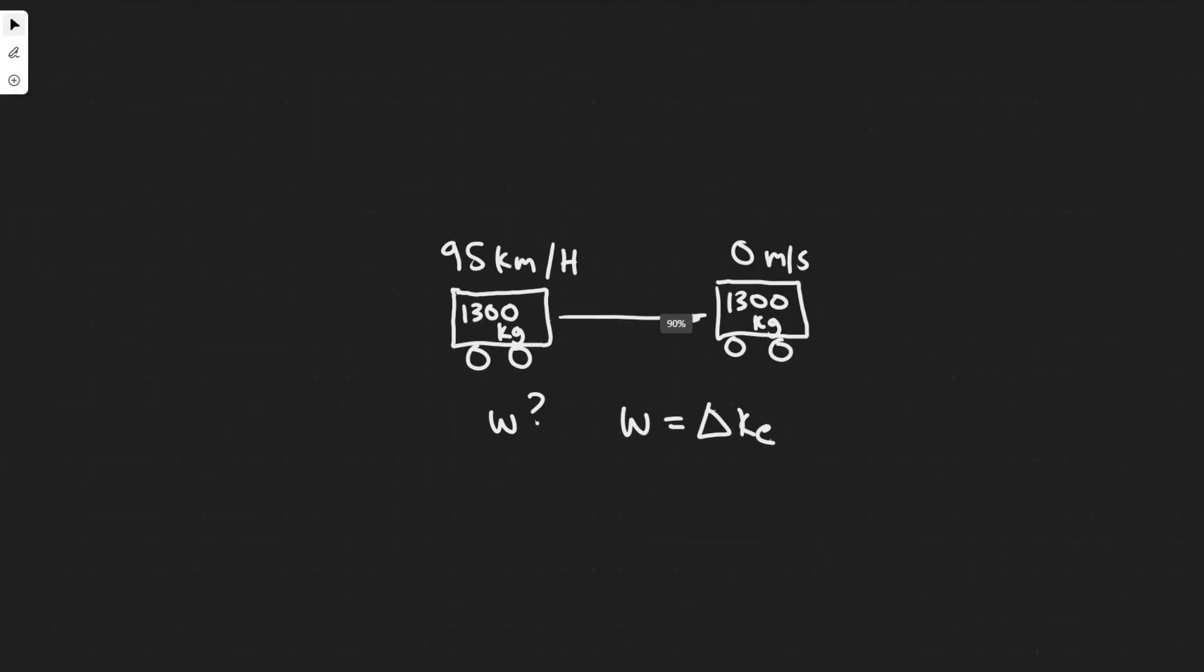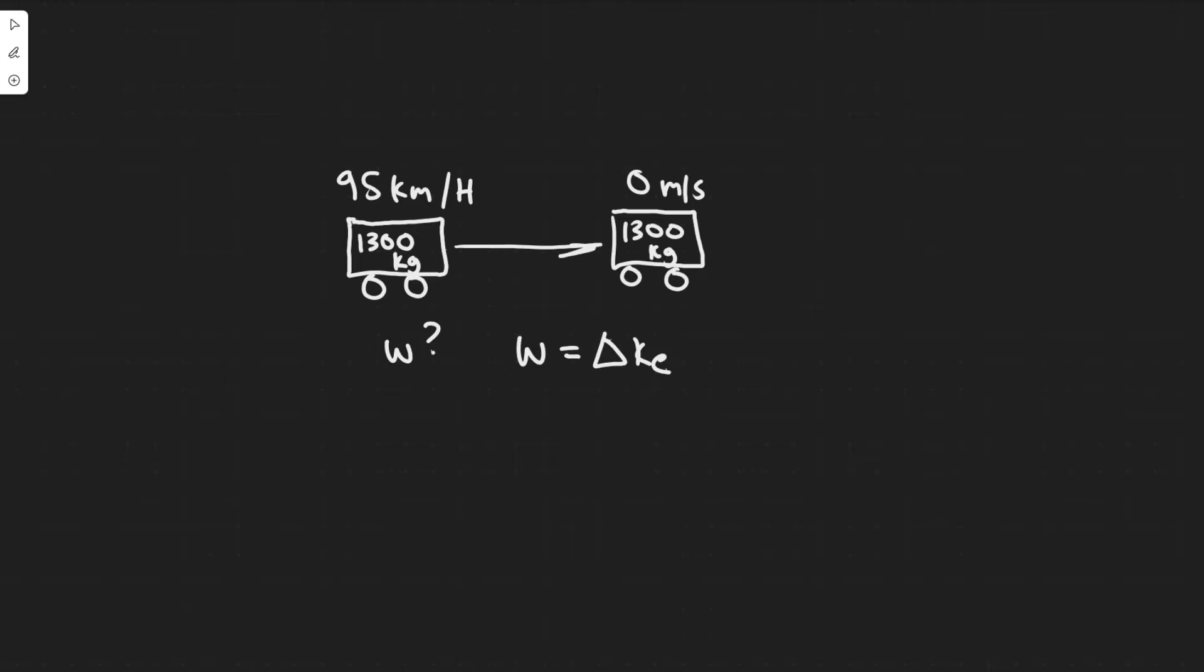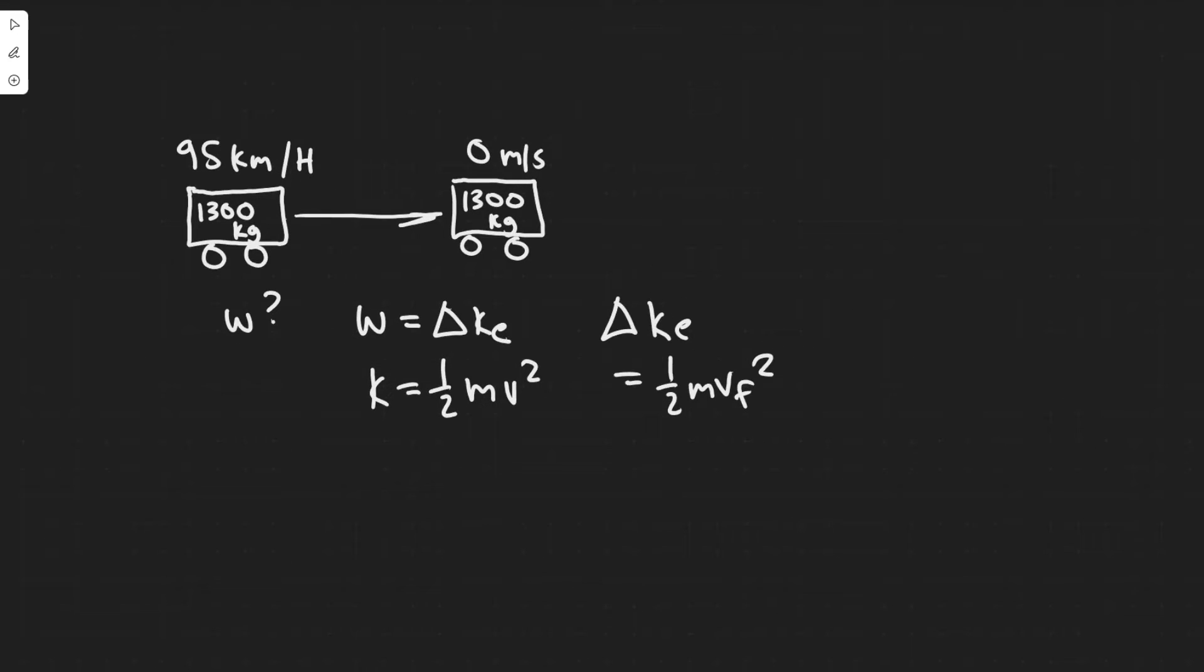You need to know the formula for kinetic energy, which is equal to 1 half mv squared. So the change in kinetic energy is equal to 1 half mv final squared, the velocity at the end, minus 1 half mv initial squared. This is the speed at the end, and this is the speed at the beginning.